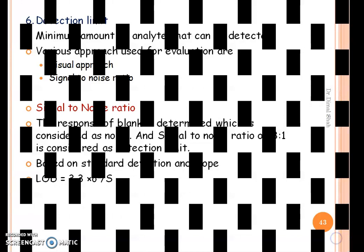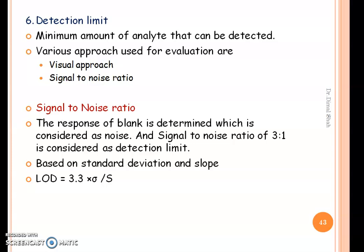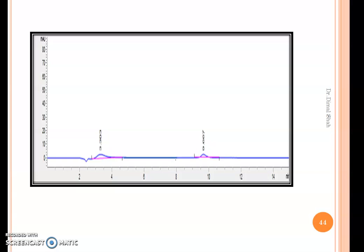The sixth parameter is detection limit, which is the minimum amount of analyte that can be detected. The same approaches are used for evaluation of detection limit: visual approach and signal-to-noise ratio. Here, a signal-to-noise ratio of 3:1 is considered as the detection limit. The equation based on standard deviation and slope is LOD = 3.3 × sigma / slope, where sigma is the standard deviation of the y-intercept or blank response and S is the mean of the slope.